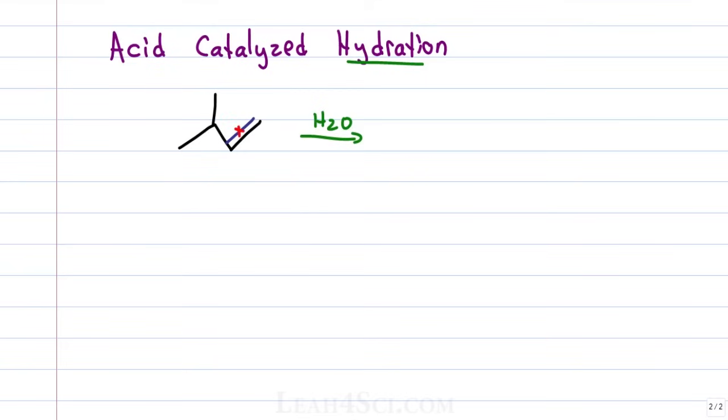So you want to break the pi bond, put the hydrogen on the less substituted carbon, that's because it's a Markovnikov addition and keep in mind the carbocation intermediate which would form on the more substituted carbon.